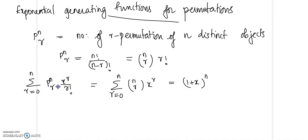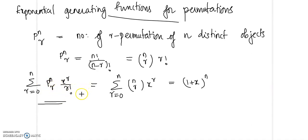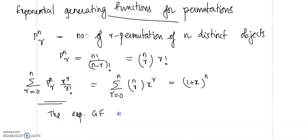That is going to be equal to (1+x)^n. So we can see that this is the exponential generating function in the form of A_r times x^r divided by r factorial. The exponential generating function corresponding to the sequence P(n,r) is equal to (1+x)^n.